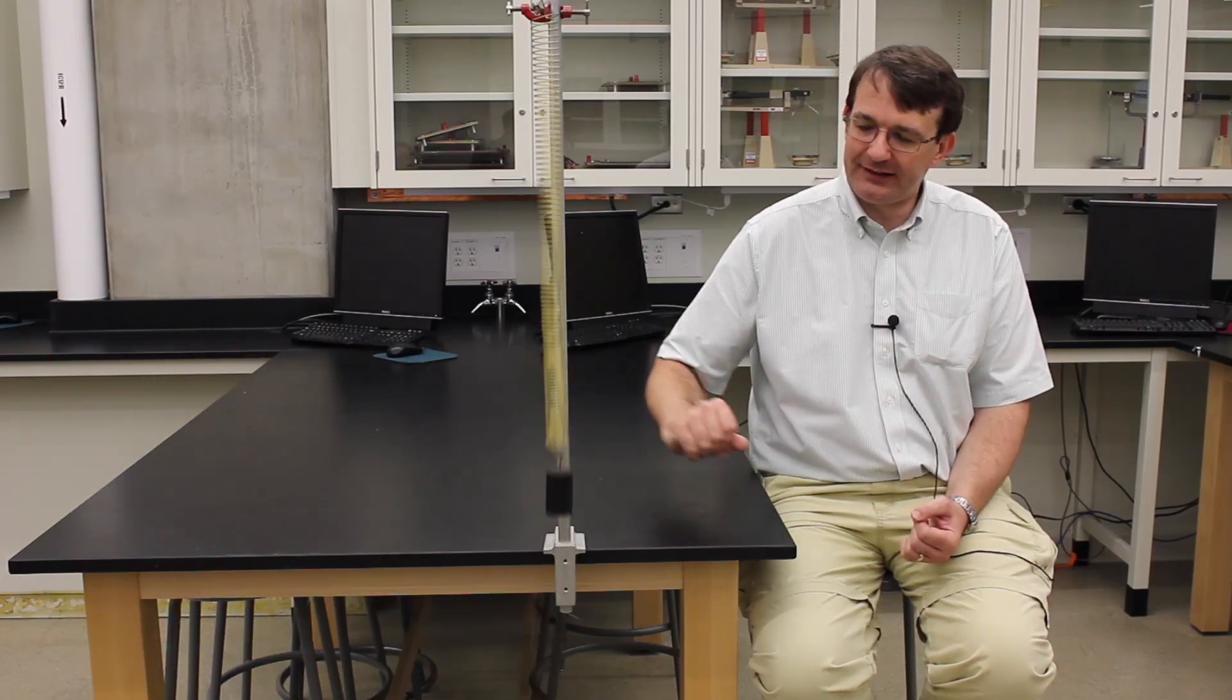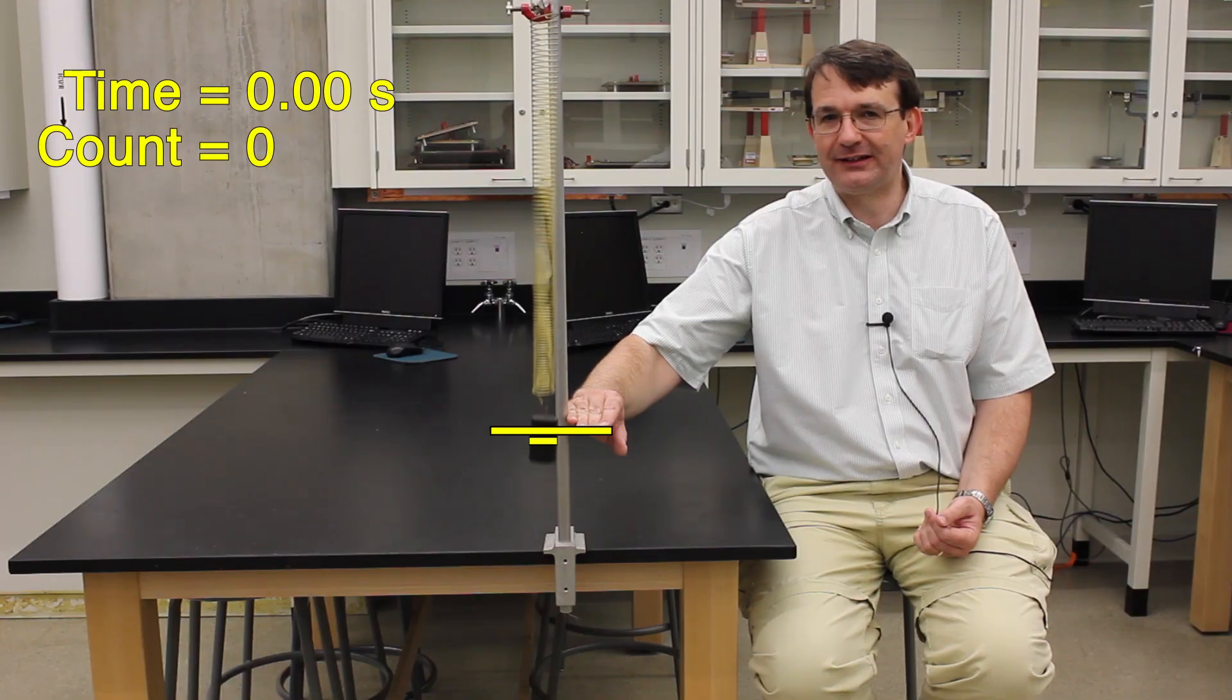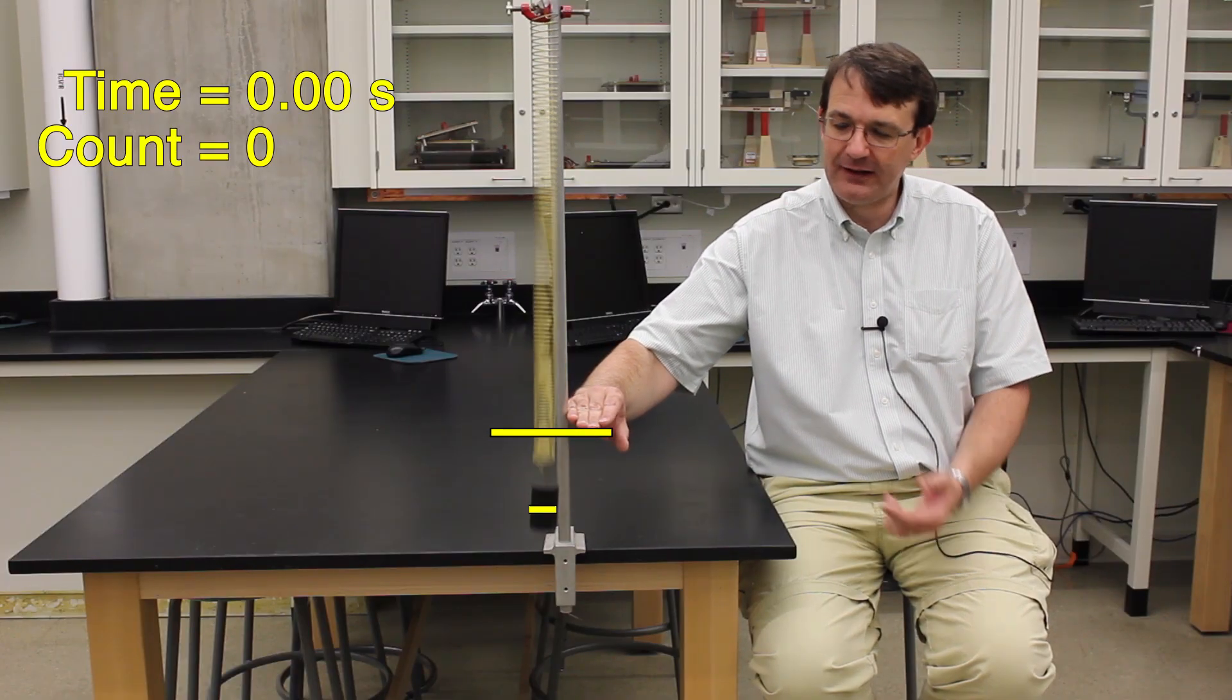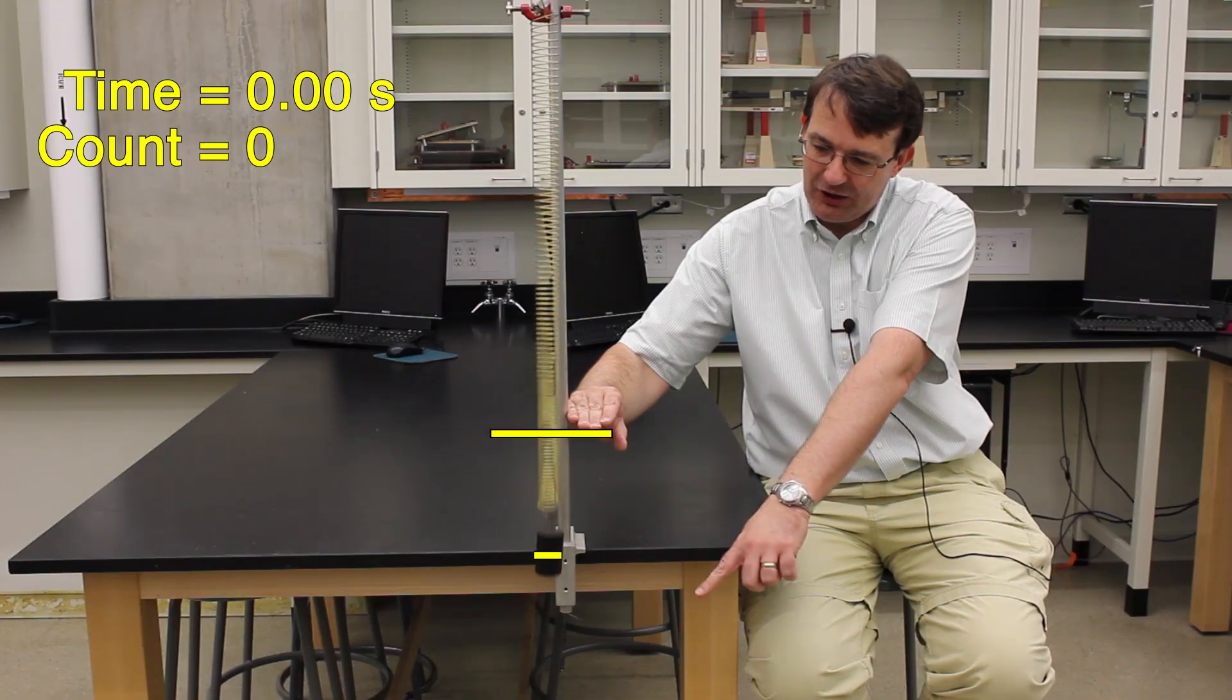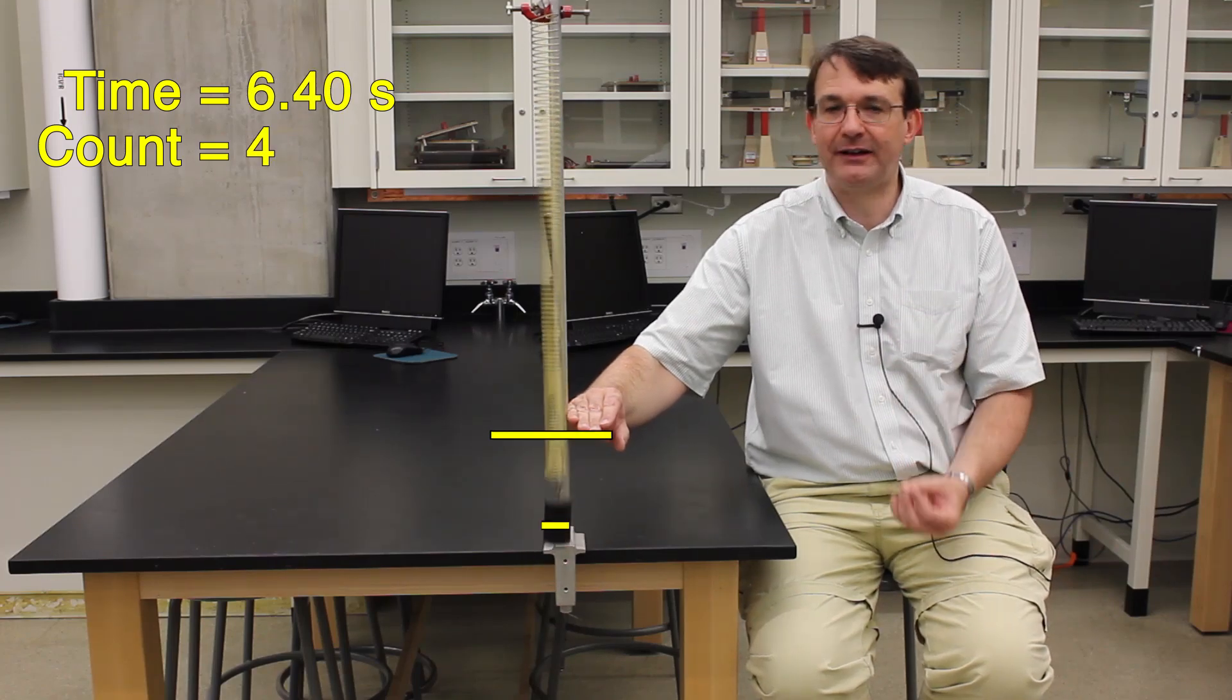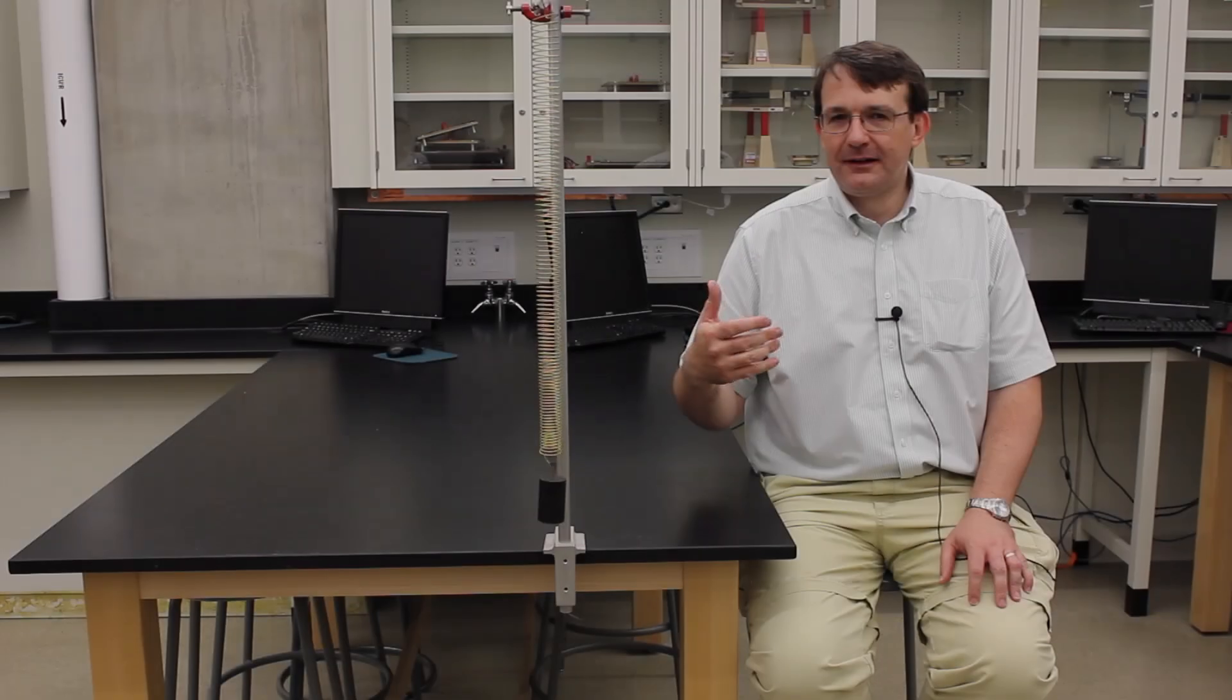So the first thing to think about is, supposing I put my hand here to measure a point, how long does it take for this mass to go through one complete cycle of its motion? My hand is close to the top of the cycle, so how long does it take the mass to start here, go down, and come back up to the same level? And that time is what we call the period of the oscillation, and in SI units, the period is measured in seconds.